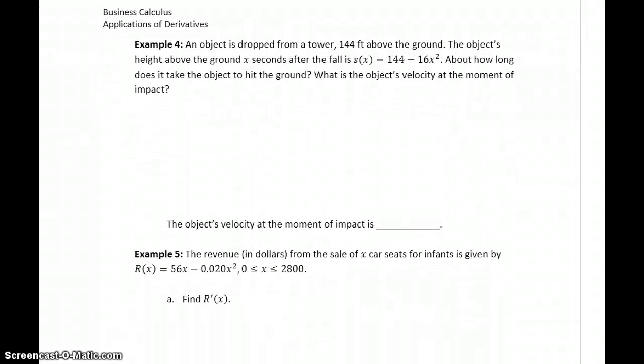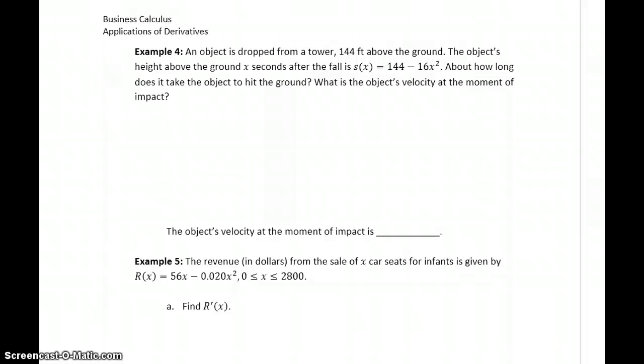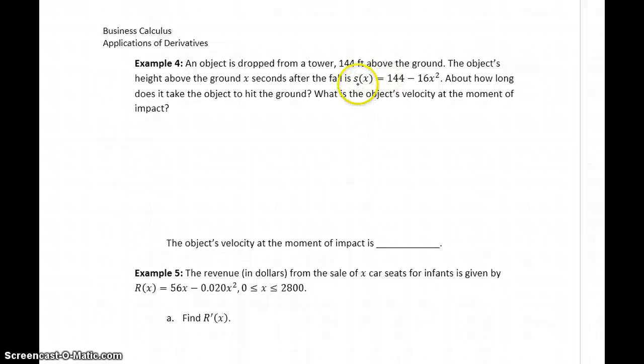In example 4, we don't have a business application, a physics application, but this is common applications for derivatives. We have an object dropped from a tower, 144 feet above the ground. The object's height above the ground, x seconds after the fall, is given by this function, lowercase s of x. But how long does it take the object to hit the ground? What's the object's velocity at the moment of impact?